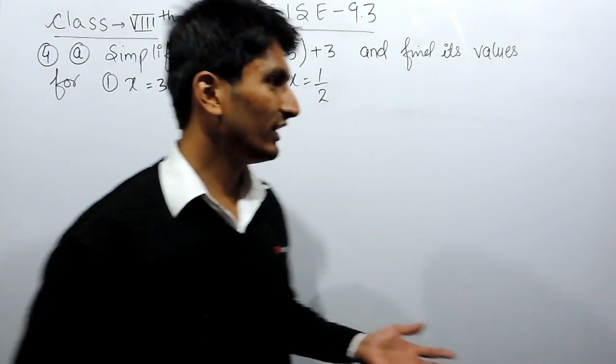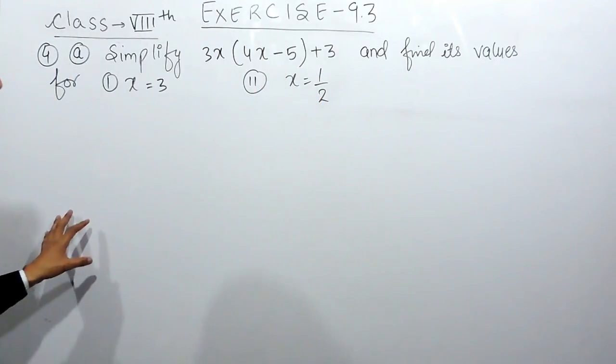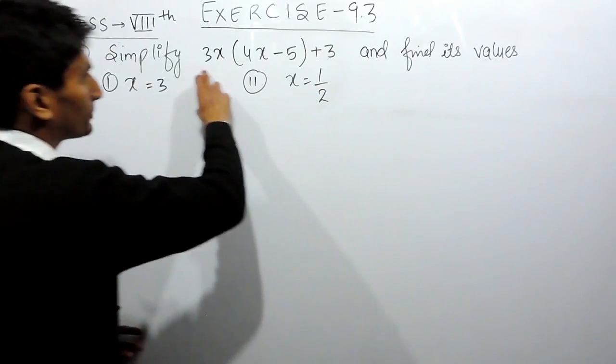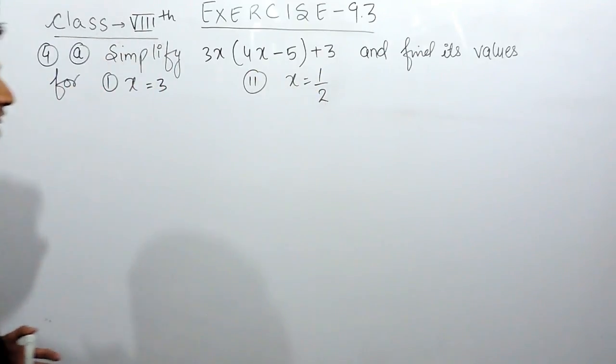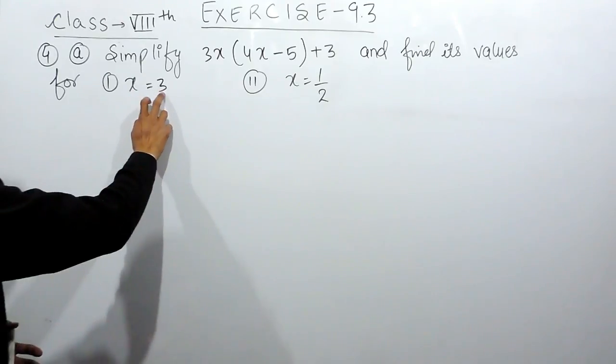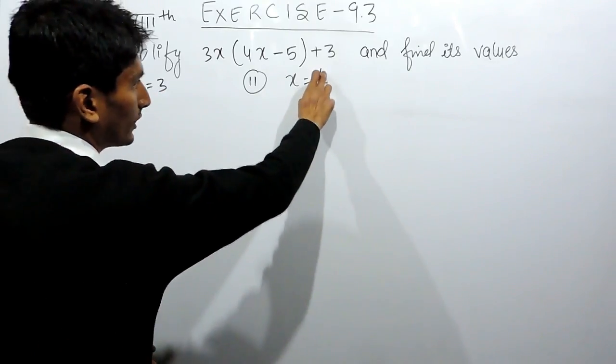Hello everyone, in this video we are going to solve question number 4 and we are solving the first part of question number 4. We have to simplify this expression and after that you have to find the value of the same expression when x is equal to 3 and when x is equal to 1 upon 2.